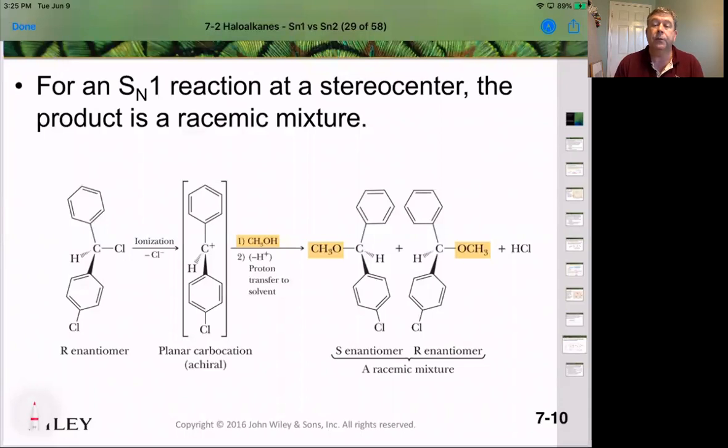Because we're forming that trigonal planar species, and the nucleophile can come in and attack on either side, we end up forming a racemic mixture, meaning half of it will come from one side of the molecule, half from the other side, giving us a one-to-one ratio of the two different possible isomers. And there's no way to control that if you are going through this trigonal planar carbocation.